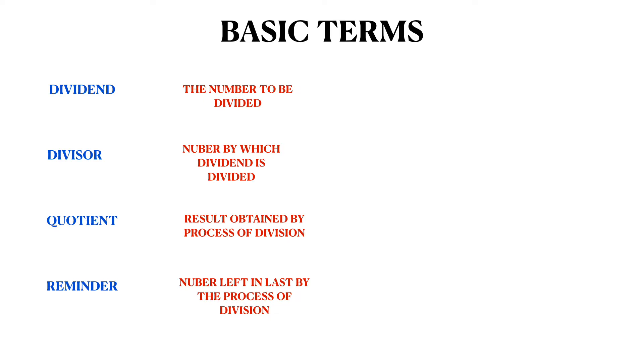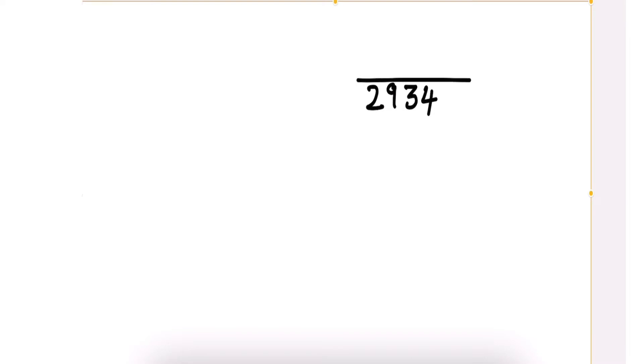Let's learn these terms by doing examples. Let's divide 2934 by 9. First, we should arrange the number like this.